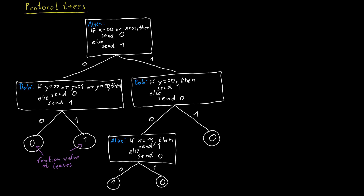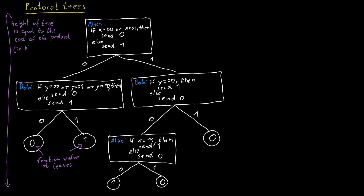Because at each level as we go down the tree we communicate one bit — either from Alice to Bob or from Bob to Alice — the height of the tree is the cost of the protocol. The deeper the tree, the higher the cost in the worst case. We look at the leaf that is furthest away from the root; how many steps it takes to reach that leaf is the cost of the protocol.